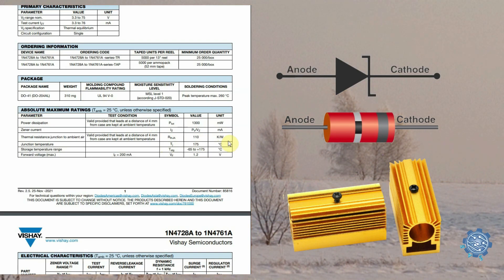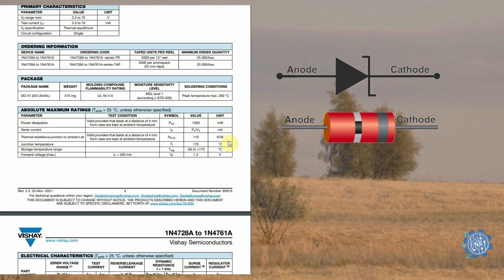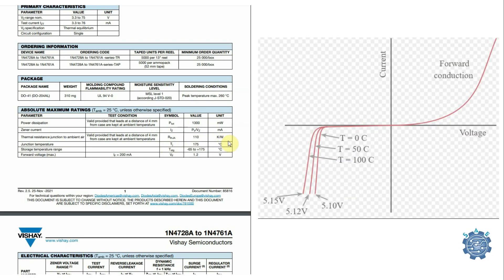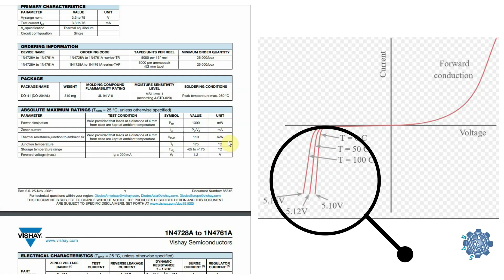Overall when selecting a Zener diode it's important to take in consideration the temperature coefficient. This is a measure of how the Zener voltage changes with temperature. The temperature coefficient is an important parameter to consider to ensure that the Zener voltage remains stable over a wide temperature range.